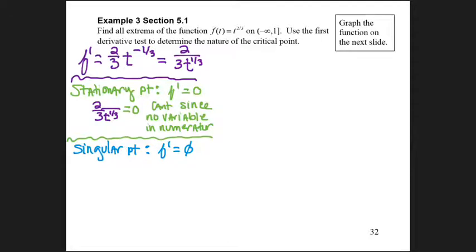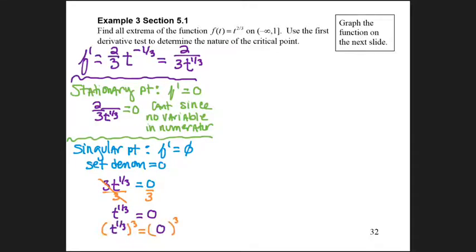Now I want to find my singular point. This is where the first derivative is undefined. That means I need to set the denominator equal to 0, so I take 3t^(1/3), the denominator, and set it equal to 0. Divide both sides by 3 to get t^(1/3) alone, and it still equals 0. Now I need to solve for t, so I cube both sides, and that leaves me with t equals 0.